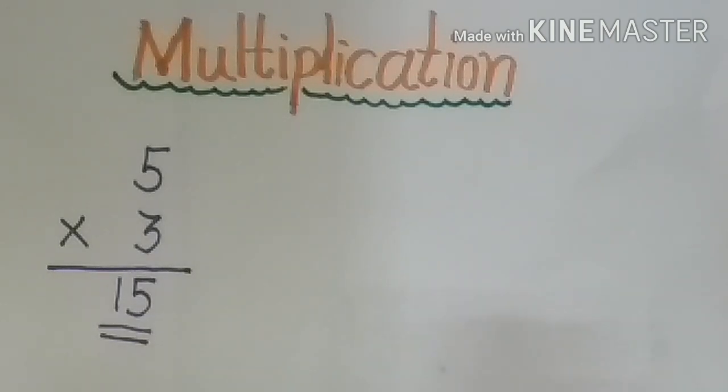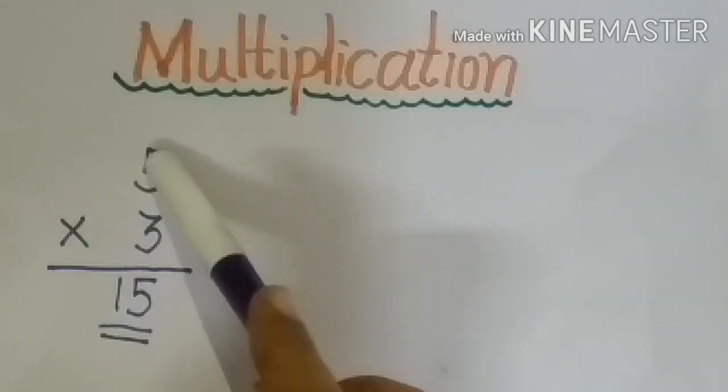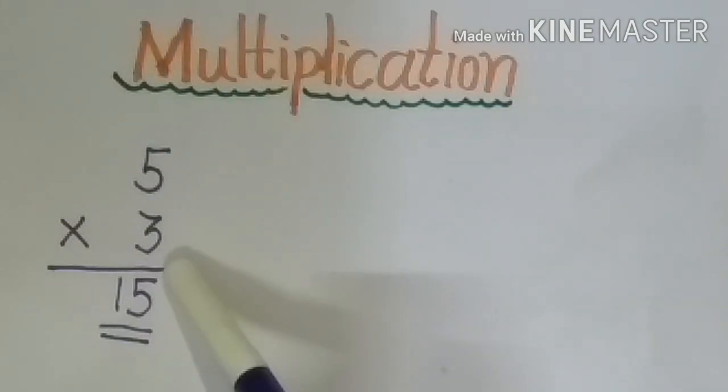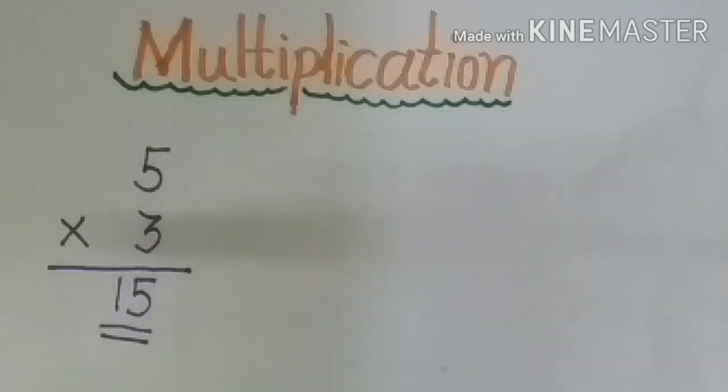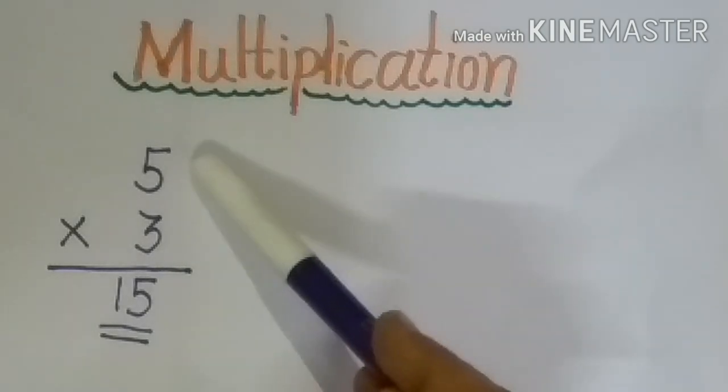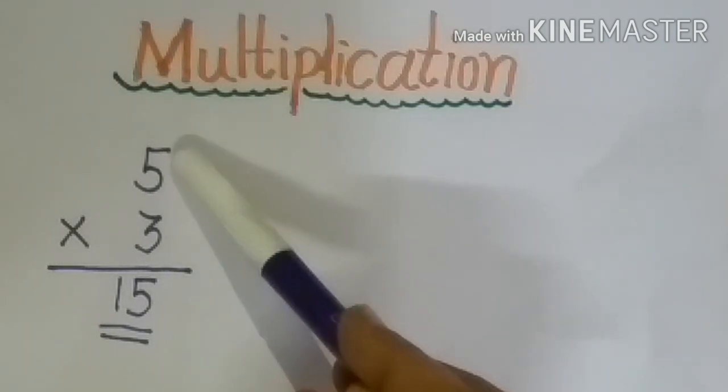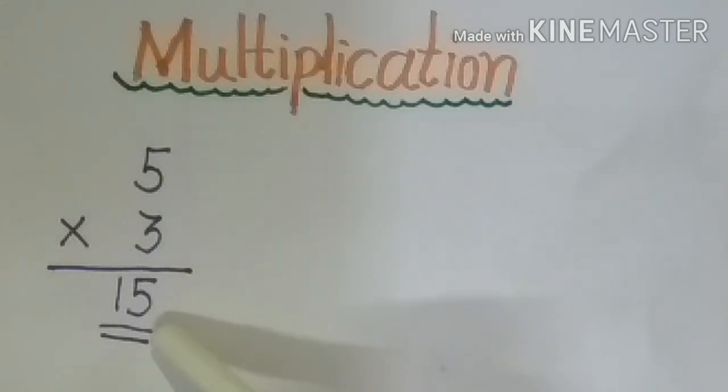[Gujarati translation explaining the commutative property of multiplication - the answer remains correct whether you multiply 3 times 5 or 5 times 3, both equal 15.]